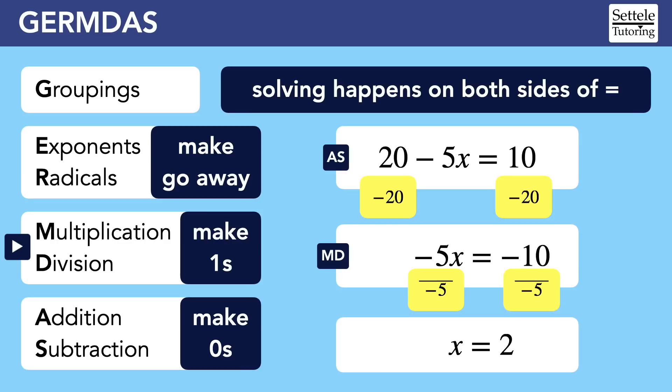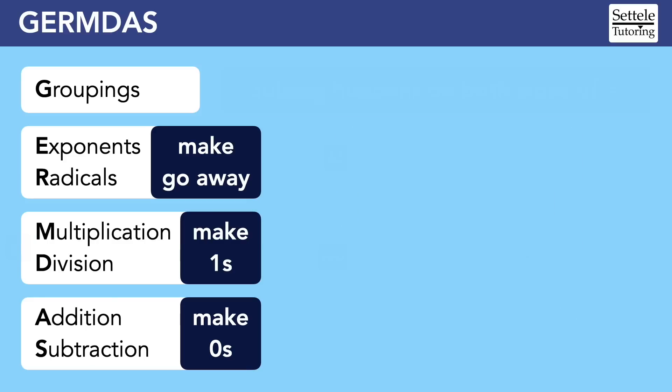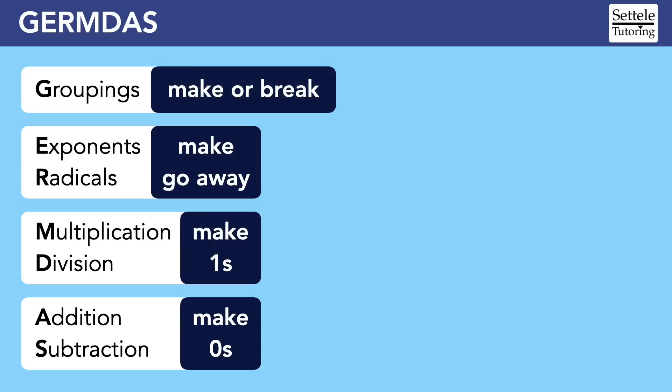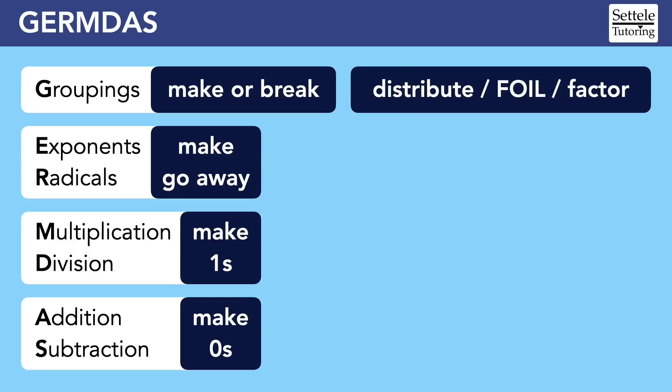This is a simple situation where the correct order of operations has probably become automatic for you already, but GERMDAS can be very helpful when an equation has a lot going on. Groupings become very important, and we'll need to be flexible with how we use them. Sometimes we need to break groupings apart, but other times we need to make our own groupings to help us solve. You've already learned a lot of the moves that we use for groupings, like distribution, foiling, and factoring.